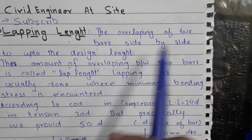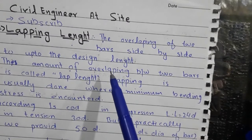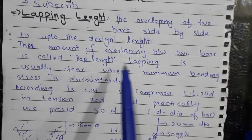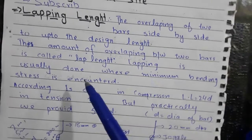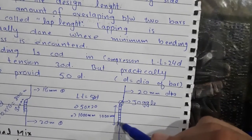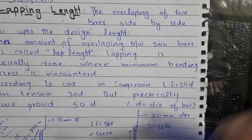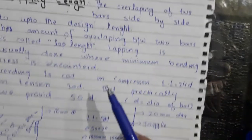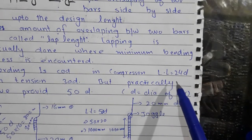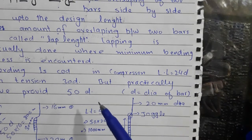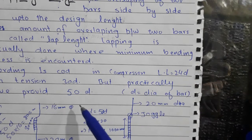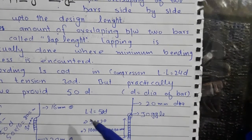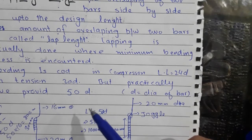To summarize: the overlapping of two bars side by side up to the design or desirable length is called overlapping or lapping length. The amount of overlapping between two bars is called lap length. Lapping is usually done where minimum bending stress is encountered. According to IS code, the compression lapping length is 24d and the tension lapping length is 30d, but practically on site we use 50d.